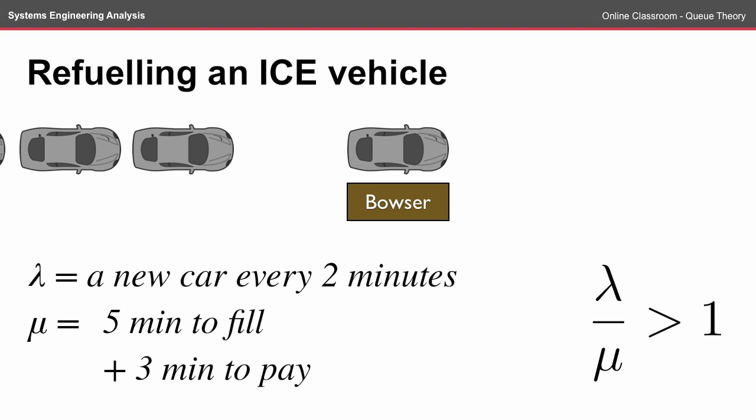We can assume that there's a new car every 2 minutes and in our breakdown of how long it takes for the car to be serviced, it takes about 5 minutes to fill the car and about 3 minutes to pay. In this situation, our lambda on mu is greater than 1, so we can't apply Q Theory. The reason for this is that the time it takes to be serviced can't cope with the new arrivals every 2 minutes.